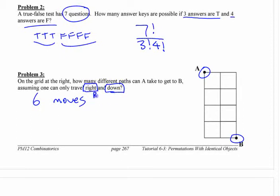I would use R to represent that. I would use D to represent this. You have to make six moves in total, right? You could do it this way. You could go right, right, down, down, down, down.